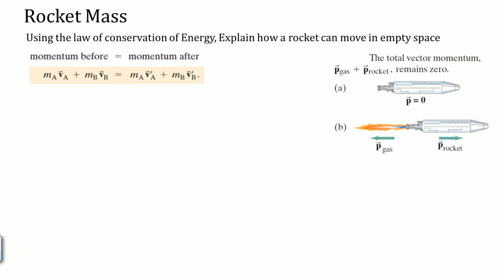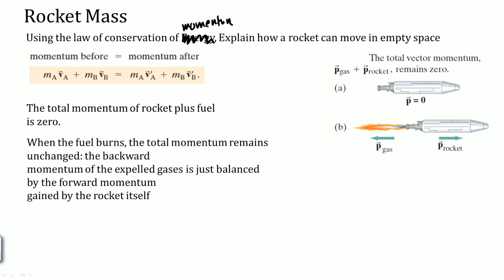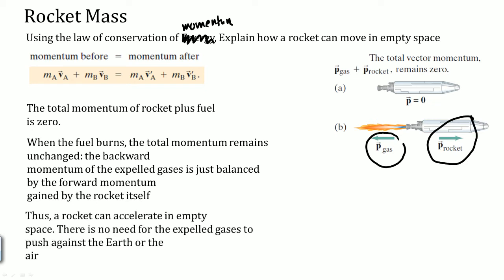Here's a good conceptual question to understand the law of conservation of momentum — not energy. The momentum before equals the momentum after. Here, the total vector momentum of the system is zero. As the rocket burns fuel, the total momentum of the rocket plus fuel equals zero. When the fuel burns, the backward momentum expelled as gas is balanced by the forward momentum of the rocket itself. Therefore, a rocket can accelerate in empty space because there's no need to push against the earth or air. This is how total momentum works for moving an object.